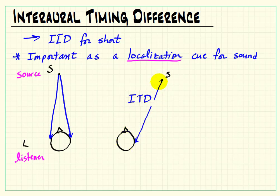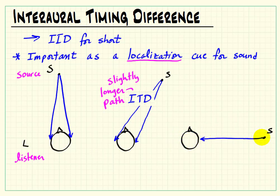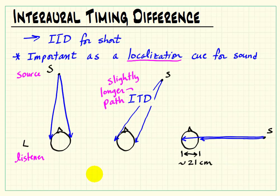Now imagine that the source is placed somewhat off-center, say at about 50 degrees or so. Now we see that the path length to your left ear is slightly longer than it is to the right. In fact, this is maximized when our source is placed at the far right, giving us the longest possible path difference, which is established by the distance between your two ears.